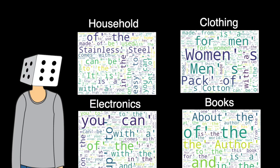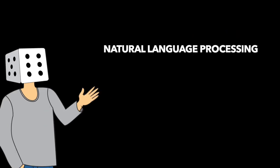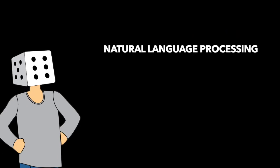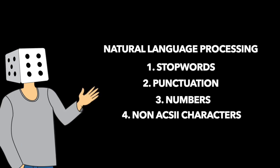As you can see, for all categories there are words like 'of,' 'the,' and there is punctuation, so we're going to use natural language processing to get rid of stop words, punctuation, numbers, non-ASCII characters, and any HTML that might have slipped through the data.